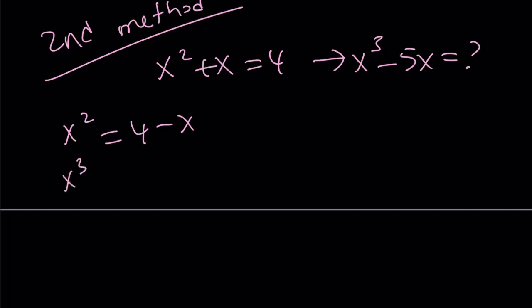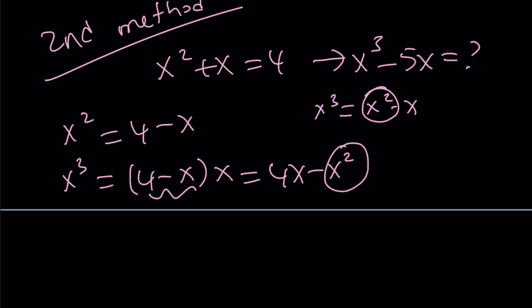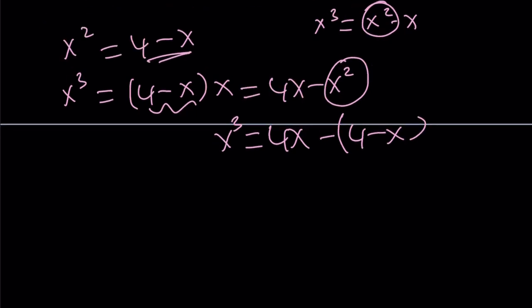From here, I'll evaluate x cubed by multiplying 4 minus x by x, because x cubed is x squared times x. If you distribute, you get 4x minus x squared. But x squared is 4 minus x, so replace x squared with 4 minus x. Continue doing it until you get a linear expression. You'll get x cubed equals 5x minus 4.